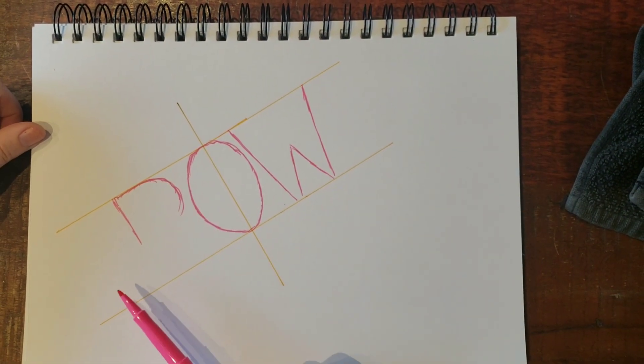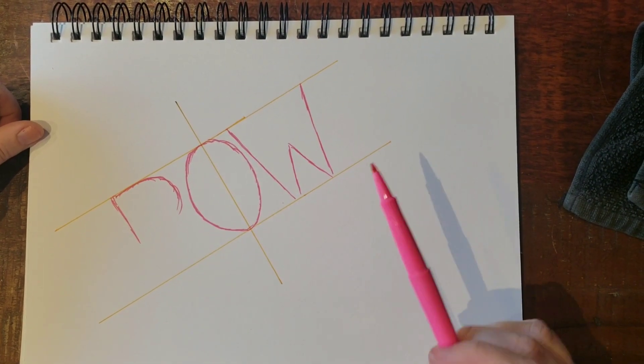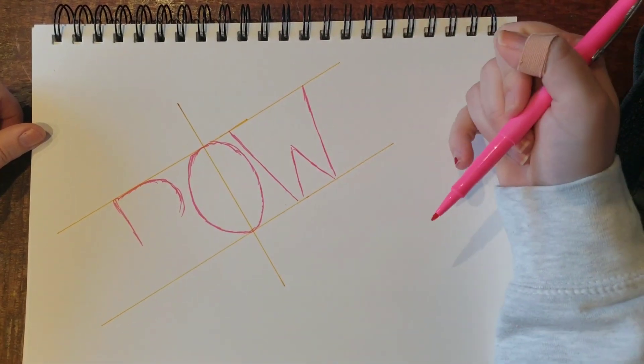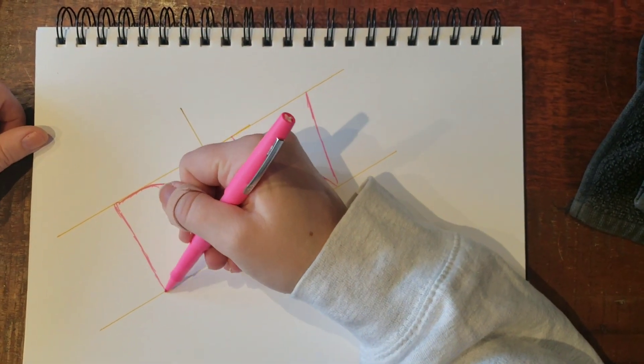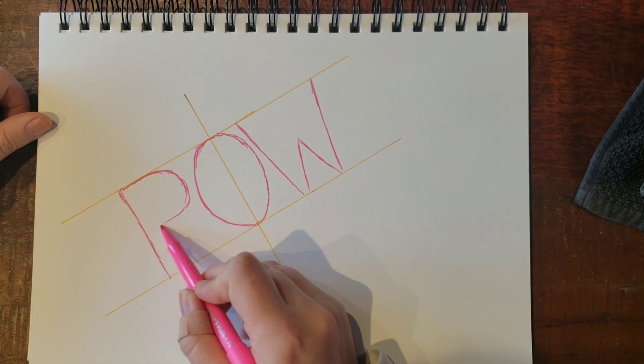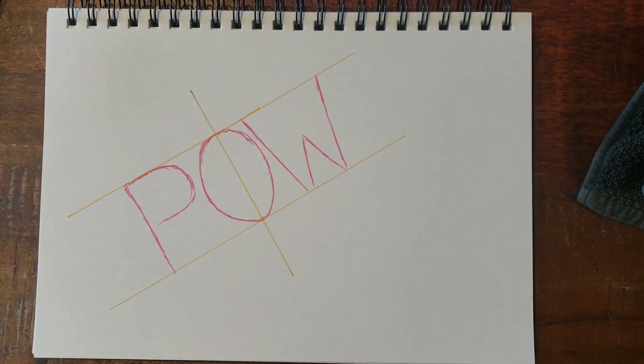We don't want to do that thing where people draw bubble writing and then it gets slightly smaller towards the end. We're using the construction lines, going from the very top to the very bottom. There we go.